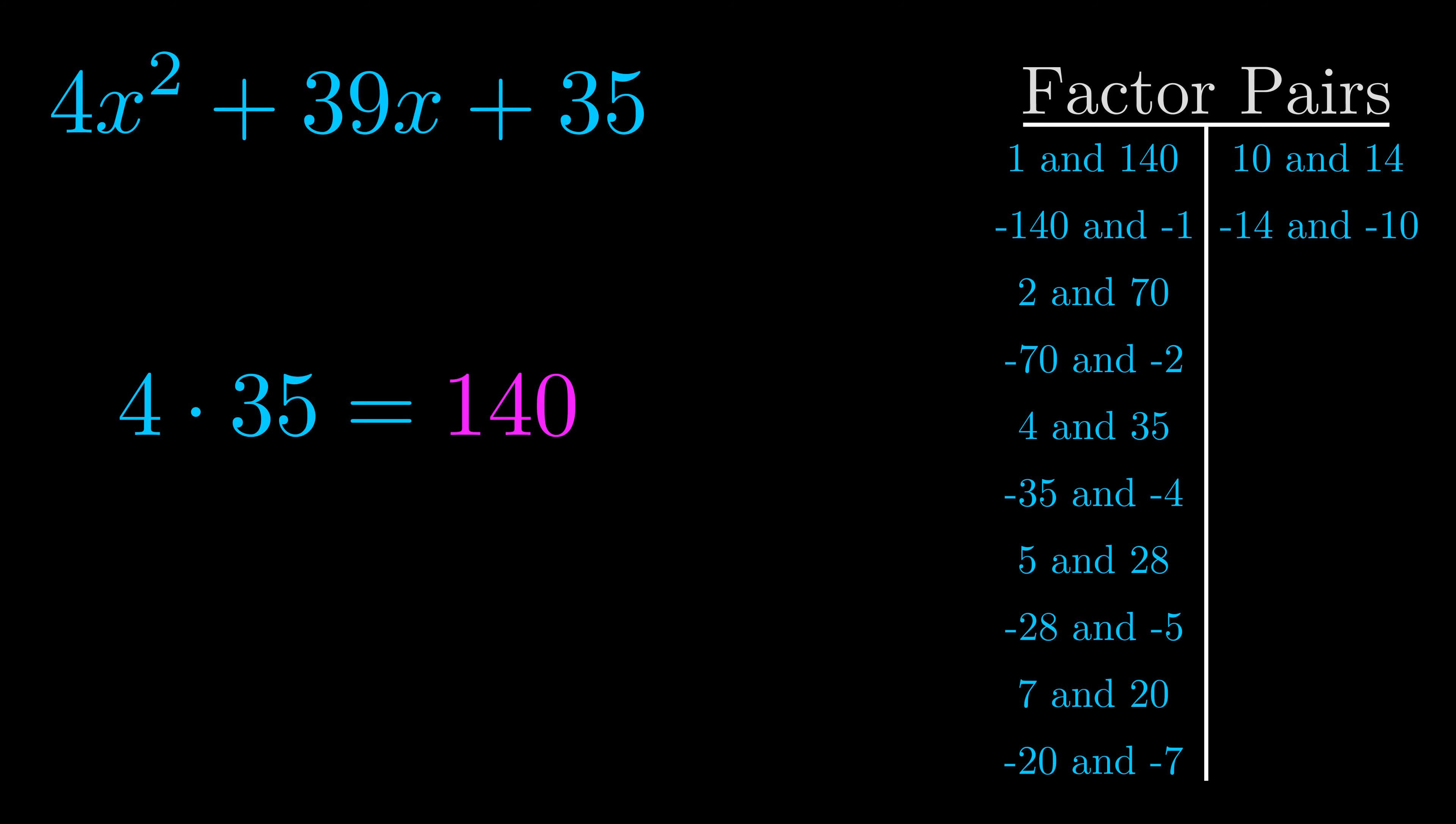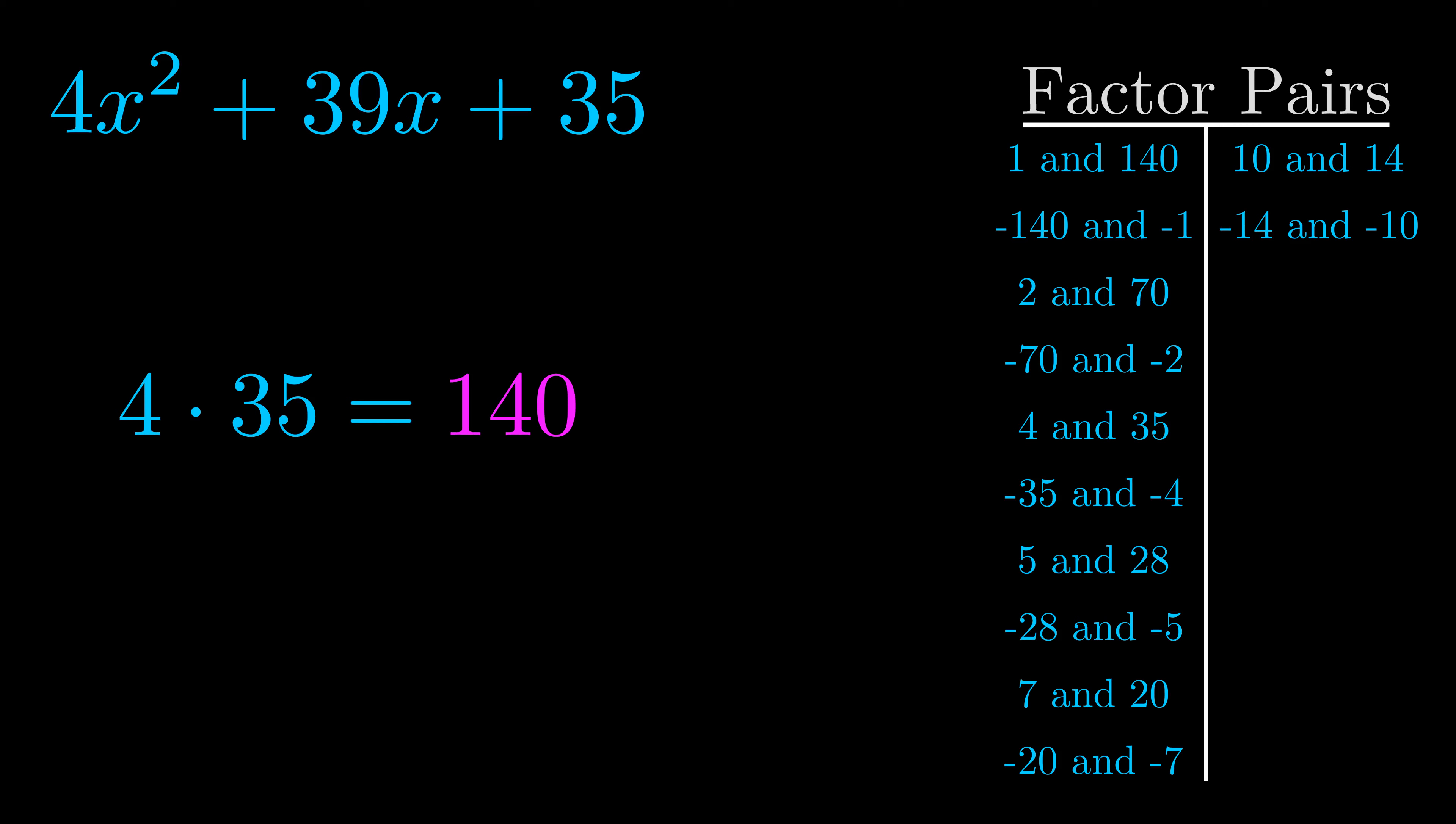Now once you have these factor pairs, the goal is to find which of these pairs adds to the b value. The b value is the coefficient on the x term. That's the middle term, the one that we haven't done anything with yet.